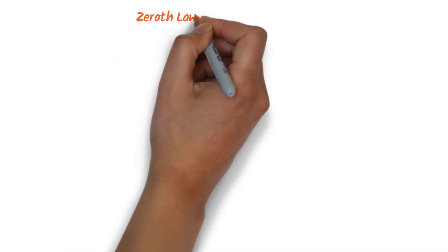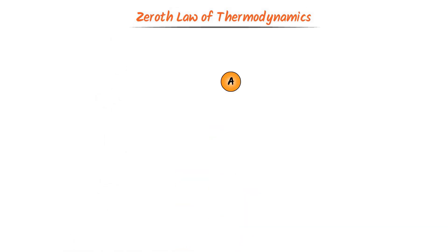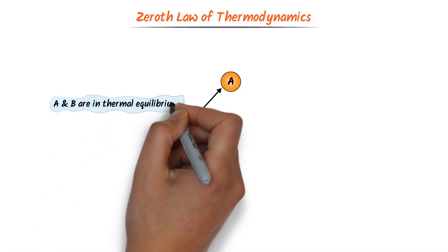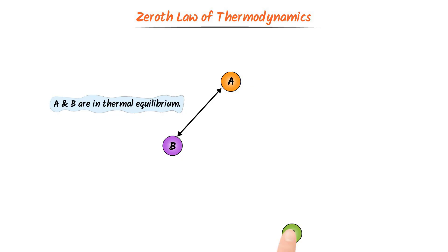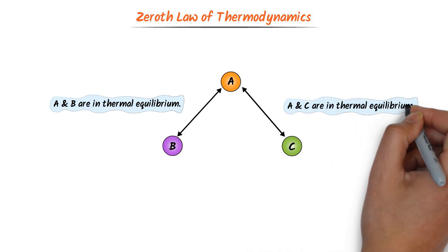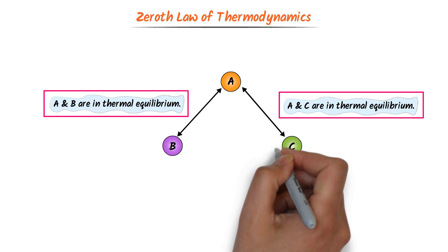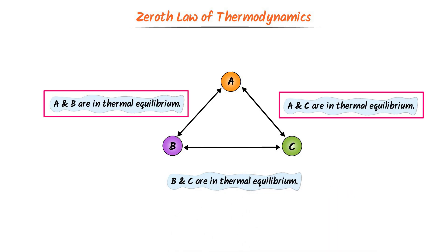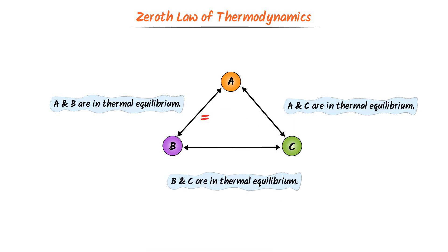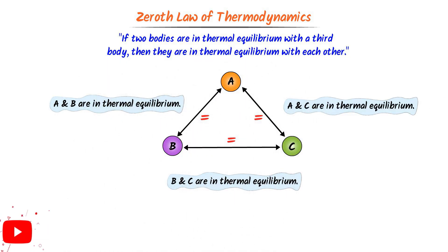Now let me teach you the easy concept of the zeroth law of thermodynamics. Consider two bodies A and B — let A and B be in thermal equilibrium. Now place another body C such that A and C are also in thermal equilibrium. Since A and B are in thermal equilibrium and A and C are in thermal equilibrium, then B and C are also in thermal equilibrium. Therefore, we define the zeroth law of thermodynamics as: if two bodies are in thermal equilibrium with a third body, then the two bodies are in thermal equilibrium with each other.